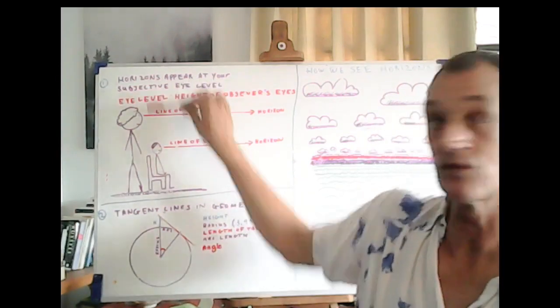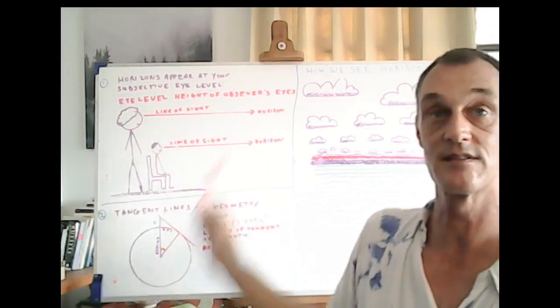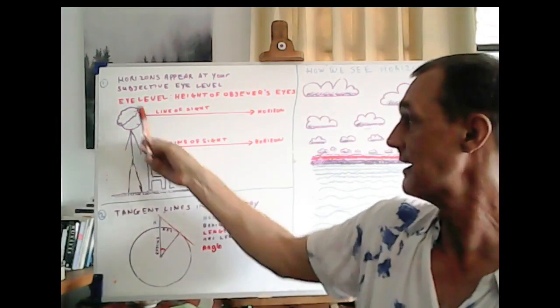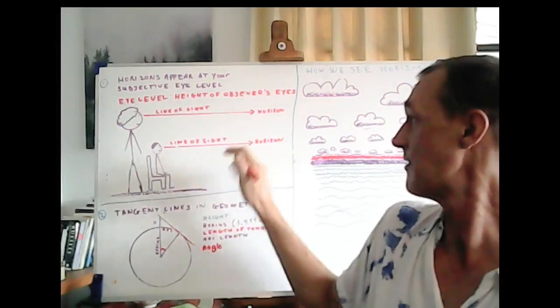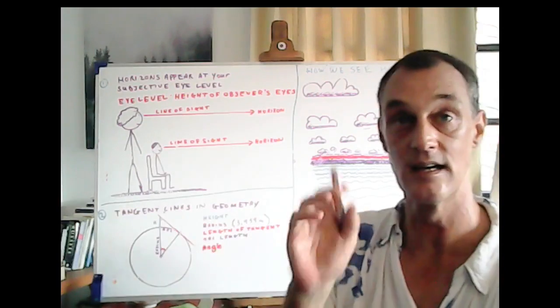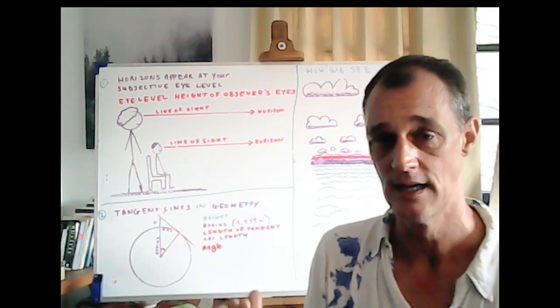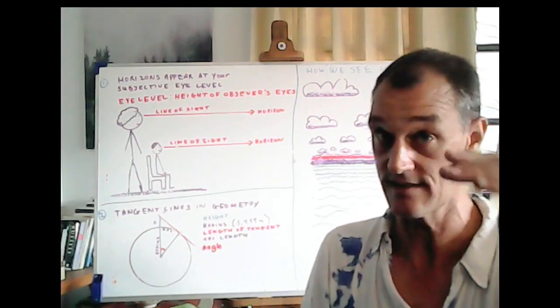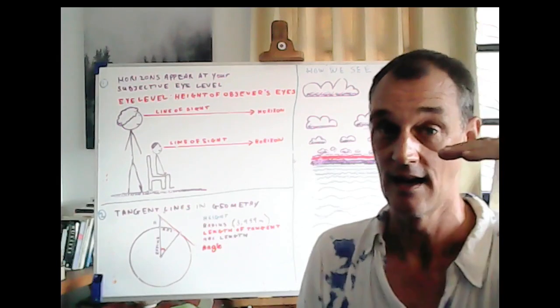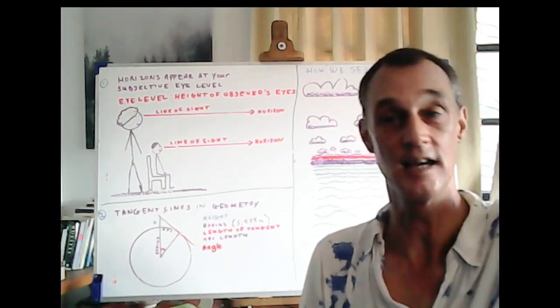So here we can see that you've got two people. One standing up has a higher line of sight than the person sitting down or a higher eye level than the person sitting down and so they each have their own individual horizon in line with their line of sight. Now if you take a camera for example and you set it up to be horizontal then you will see this convergence, the horizon, at the center of the field of view.